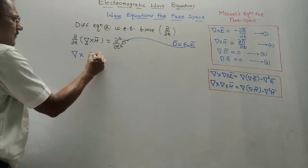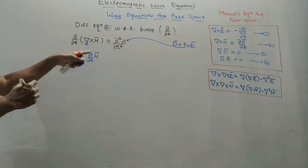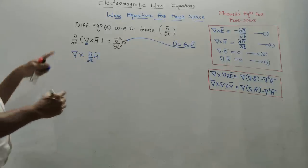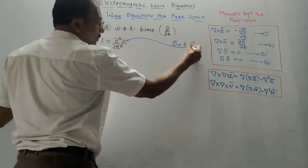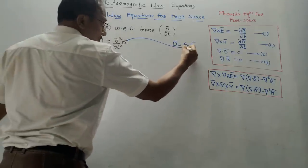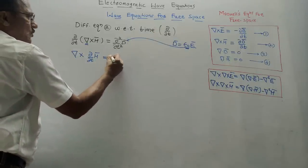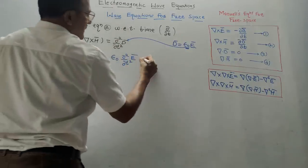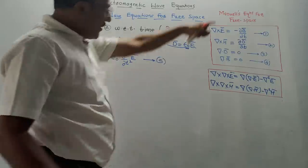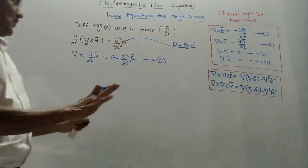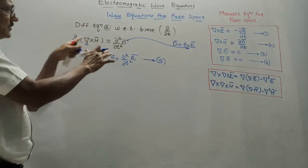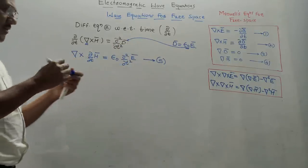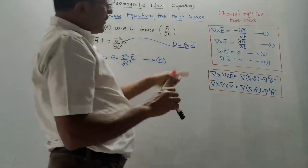After interchanging del and ∂/∂t, we write: del × (∂H̄/∂t) = ε₀ ∂²Ē/∂t², since ε₀ is a constant taken outside the derivative. This is equation number 5. To summarize: we differentiated equation 2, simplified it, and substituted D̄ = ε₀Ē with ε₀ taken out as a constant.